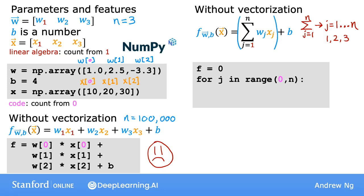In code you can initialize f to zero, then for j in range from 0 to n, this actually makes j go from 0 to n minus 1, so from 0, 1 to 2. You can then add to f the product of w[j] times x[j].